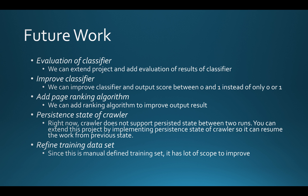For future work: you can add evaluation of the classifier to see how well it is working. You can improve the classifier — right now the Naive Bayes classifier using MetaPy only gives a score of exactly zero or one, not a continuous value between zero and one, so you could improve it or replace it with one that generates continuous scores. You can also add page ranking algorithms, add persistent state to the crawler, and enhance the training set.